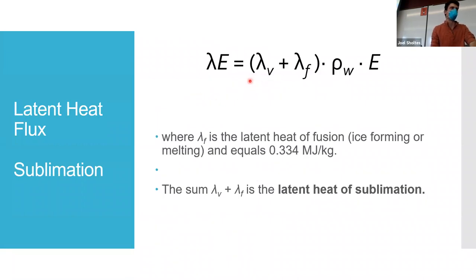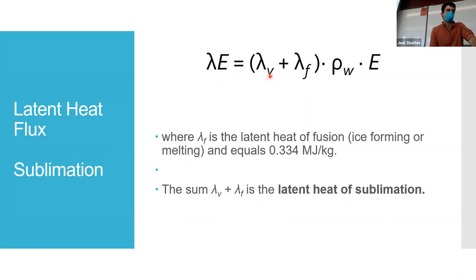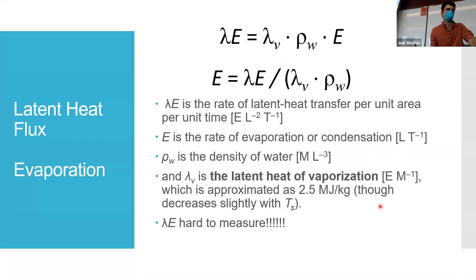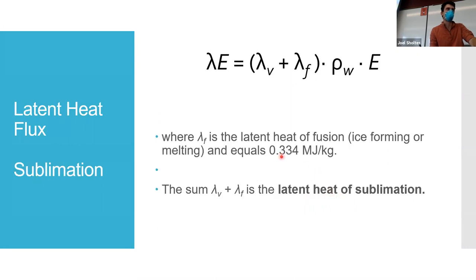For sublimation — going directly from ice to vapor — we use the same equation but add the latent heat of fusion. We have to go from ice to water, then water to water vapor. The latent heat of fusion is 0.334 megajoules per kilogram, and adding that to the latent heat of vaporization (2.5 MJ/kg) gives the latent heat of sublimation.